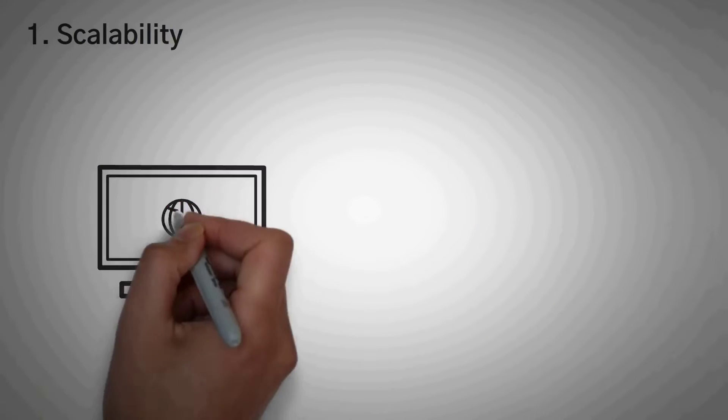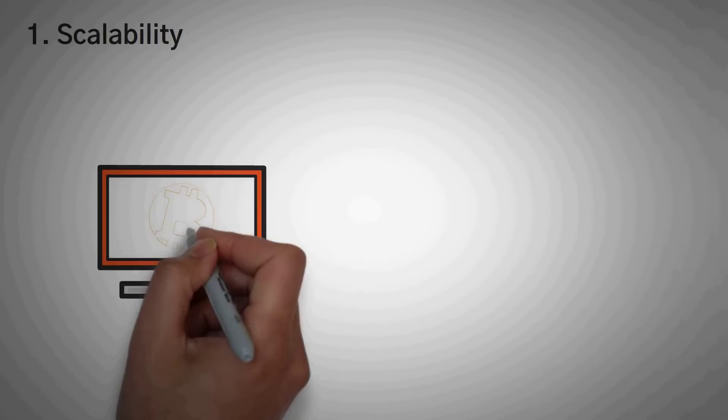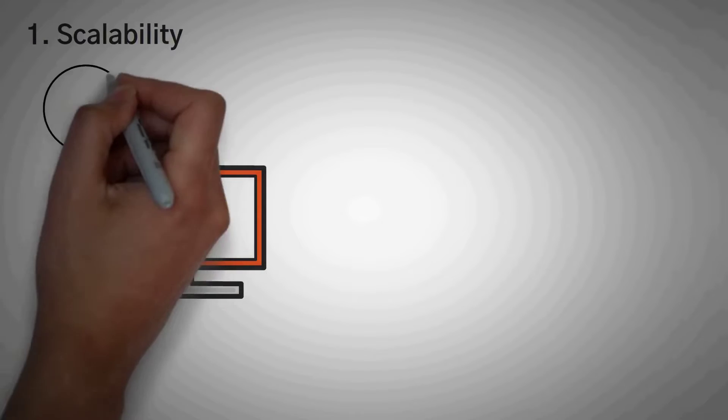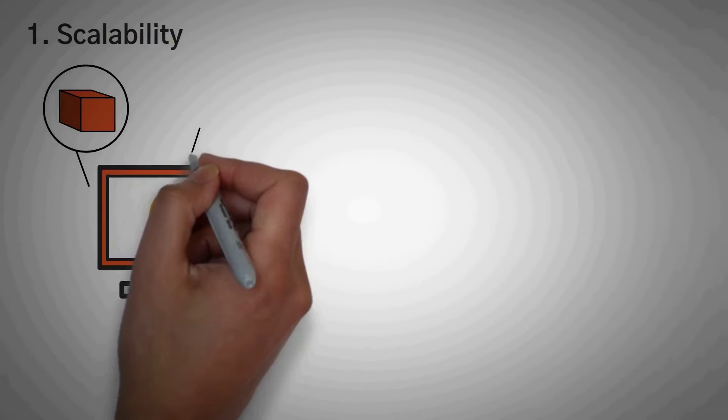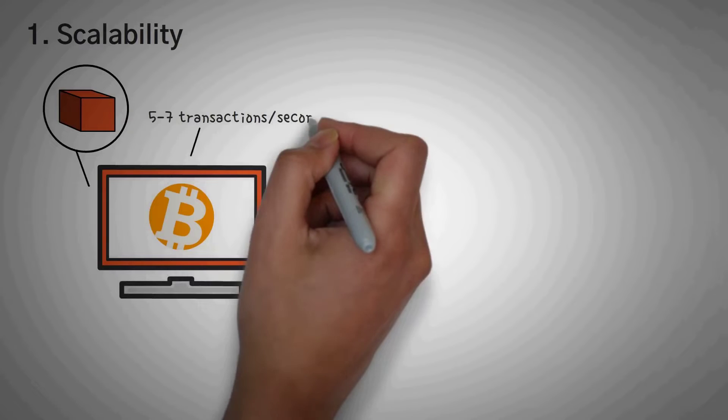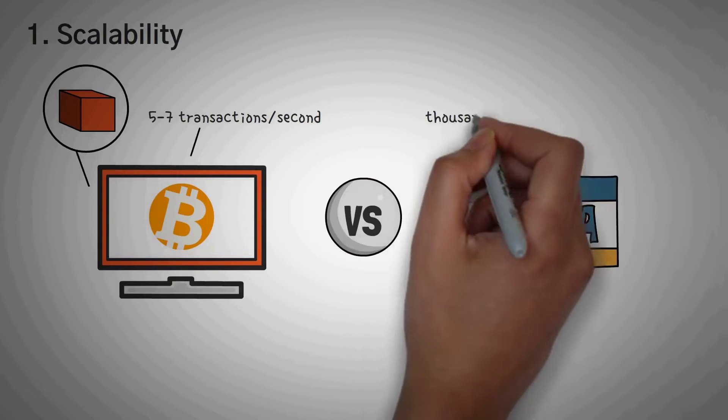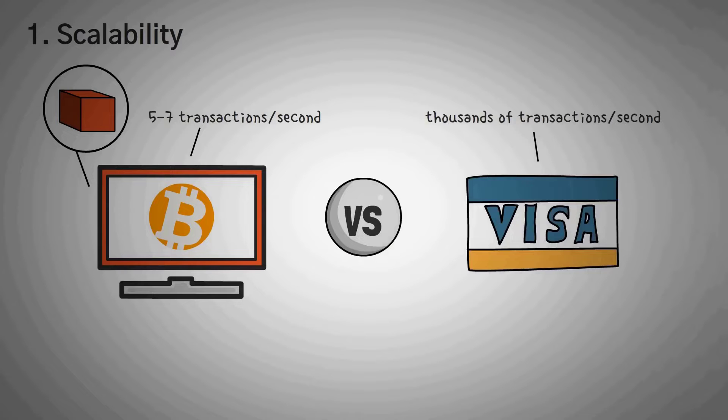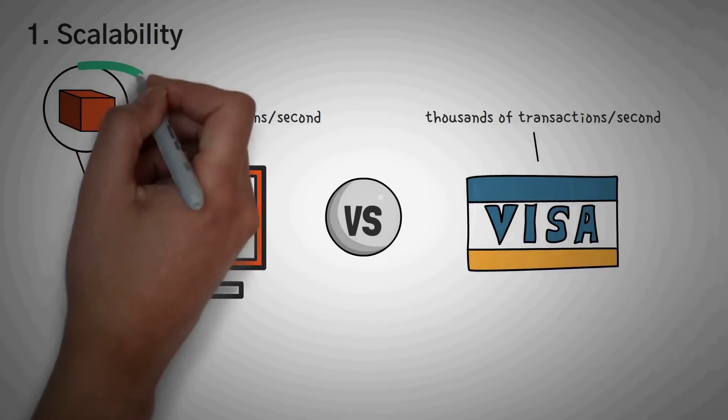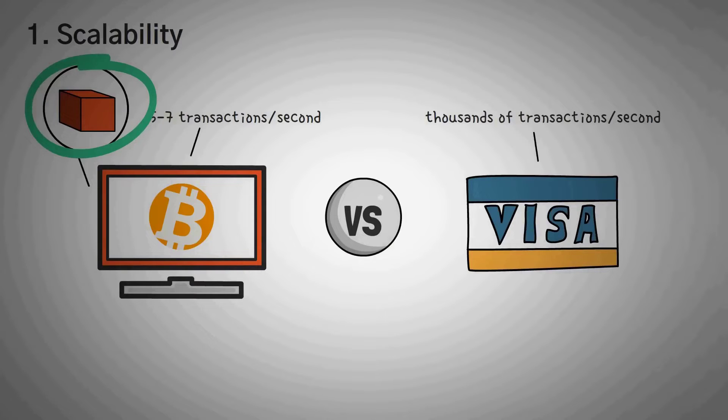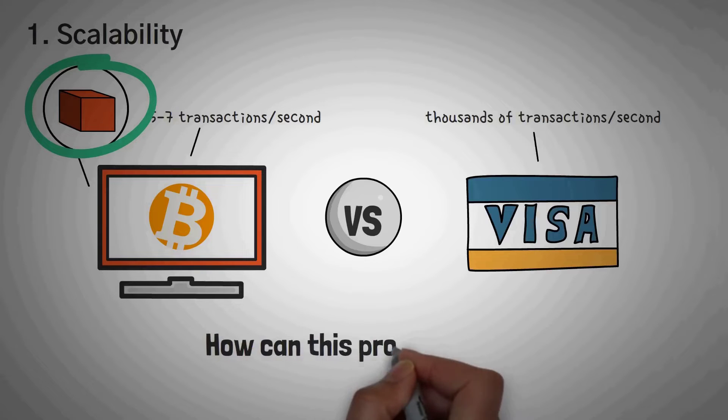Number one is scalability. Fans of Bitcoin know this problem all too well. Because of Bitcoin's block size, the network can only confirm around five to seven transactions per second. Now, this is not even comparable to the Visa behemoth that can do tens of thousands of transactions per second. The block size debate in Bitcoin raged on for years, but at least one question remains for basically any cryptocurrency. How can this project scale?